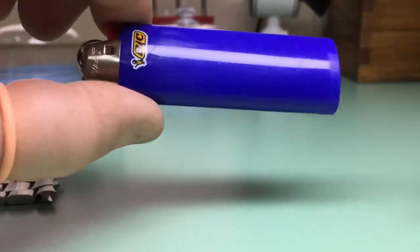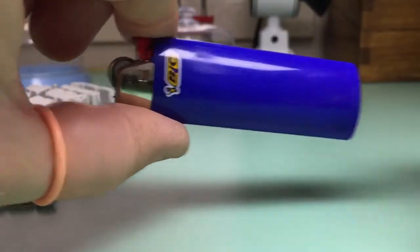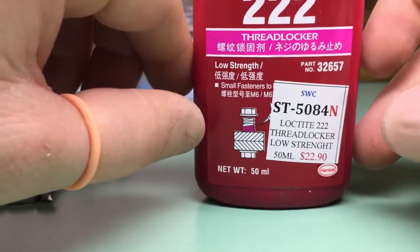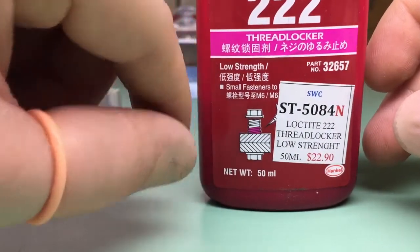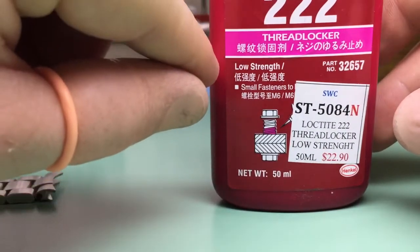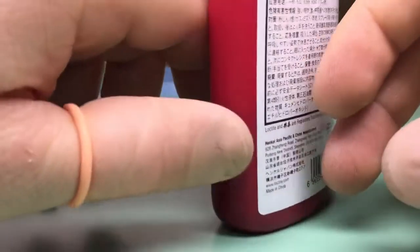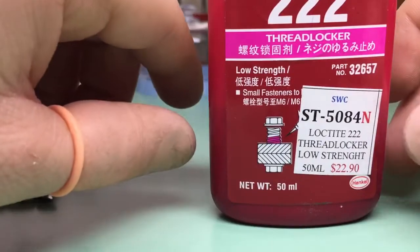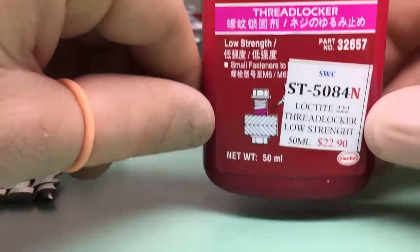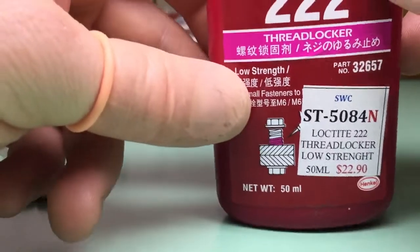Next we're going to need a lighter, which will be explained in a moment, and then some Loctite. Here we have a purple Loctite. It's not particularly high strength, it's low strength. I think it's fine for bracelet screws. I don't think we need to be super gluing anything in place, so this is a very good Loctite to use.